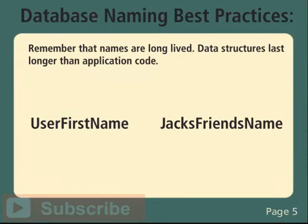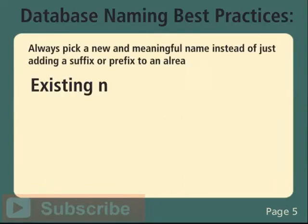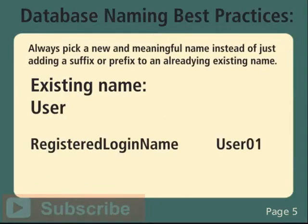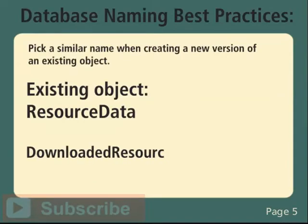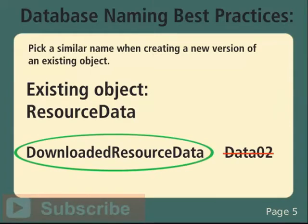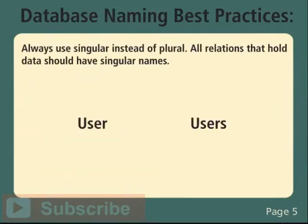Remember that names are long-lived; data structures last longer than application code. Always pick a new and meaningful name instead of just adding a suffix or prefix to an already existing name. Pick a similar name when creating a new version of an existing object. Always use singular instead of plural — all relations that hold data, including tables and views, should have singular names. For example, 'user' is better than 'users'.